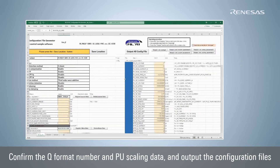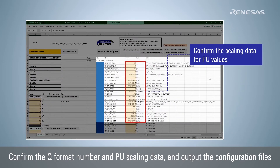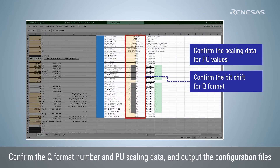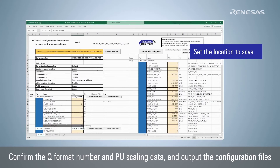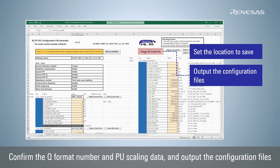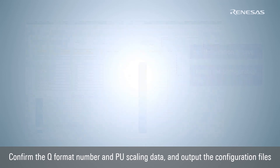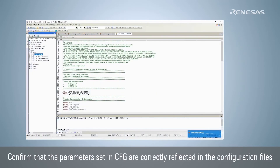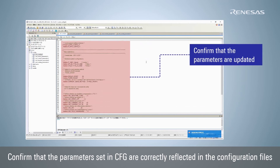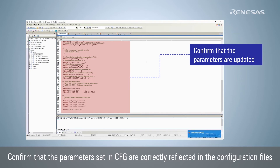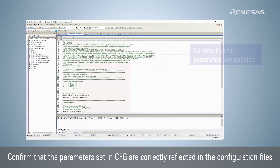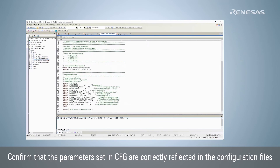Designing the Q format number and scaling to the PU system for use in control operations is also done automatically. By specifying the location to save the files in the config folder of the sample software and clicking the output config file button, the designed parameter values can be reflected in the header files. Open an IDE such as CS Plus and make sure that the header files in the config folder are updated to reflect the parameters set in CFG. Select each header file and confirm its contents.